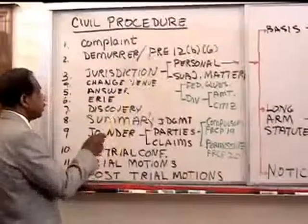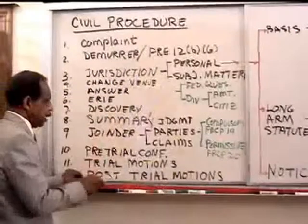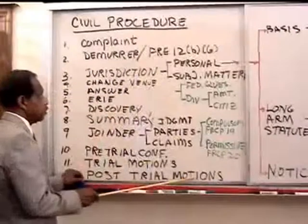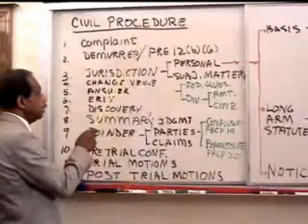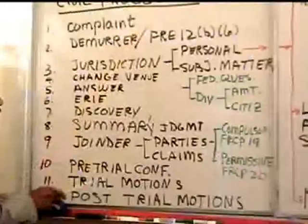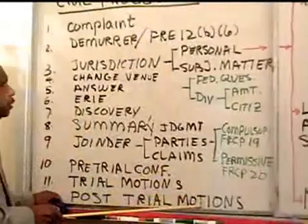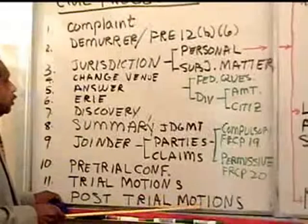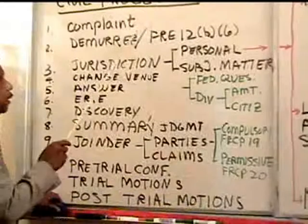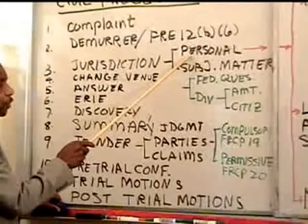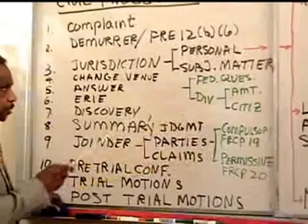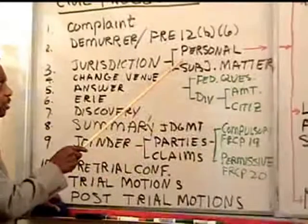The doctrine of res judicata and collateral estoppel apply to causes of action or issues which have been decided. These can come up in earlier motions to dismiss, like summary judgment — if the cause of action has already been brought once before, you may get summary judgment or a demurrer. Res judicata and collateral estoppel can also come up when the other side doesn't have a lawsuit anymore because these matters have already been litigated, or when certain issues have been previously litigated and decided in your favor and are therefore predetermined facts in the new lawsuit. This is the layout of civil procedure and the things bar examiners want to know.